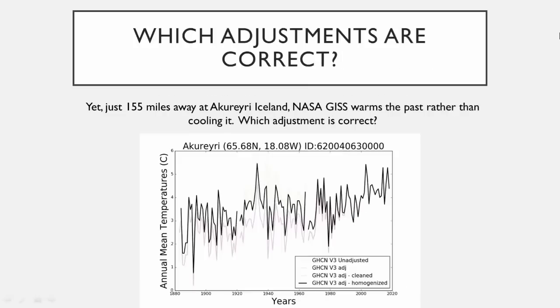Here's a temperature station about 155 miles away from Reykjavik, and the adjustment goes in a different direction — they actually warmed the past ever so slightly. So you've got to wonder, which adjustment is correct? How do they know it was warmer in the past on this station and cooler in the past on that one? It's an arbitrary thing based on algorithms.